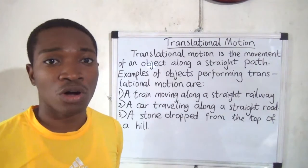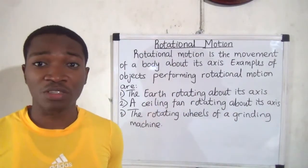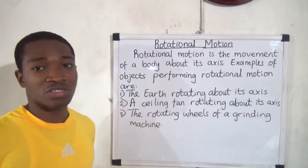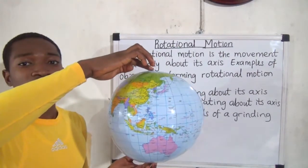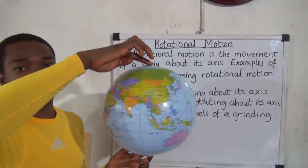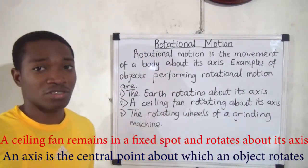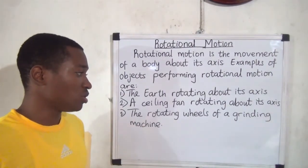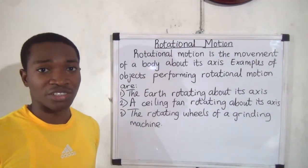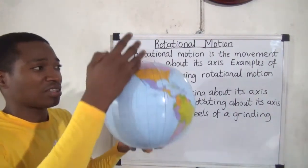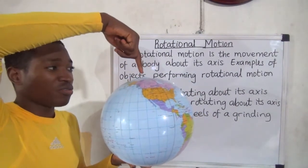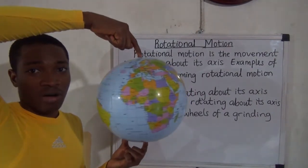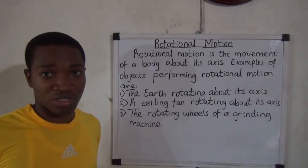The second kind of motion is rotational motion — the movement of an object about its axis. Examples are the earth rotating about its axis, a ceiling fan rotating about its axis while remaining in a fixed spot, and the rotating wheels of a grinding machine. The axis is a straight line about which the object rotates. The straight line running from top to bottom is the axis of the earth, and the earth rotates about that line.